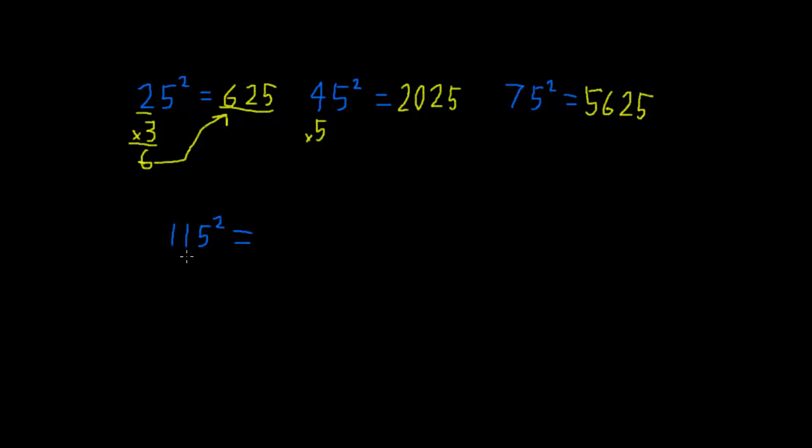Here's what you do. You take 11 and you increase it by 1. So, you have 11 times 12. Now, if you remember my video on multiplying numbers by 11, you should immediately know that that will be 132. And then you stick a 25 on the end of it. And you are once again done.